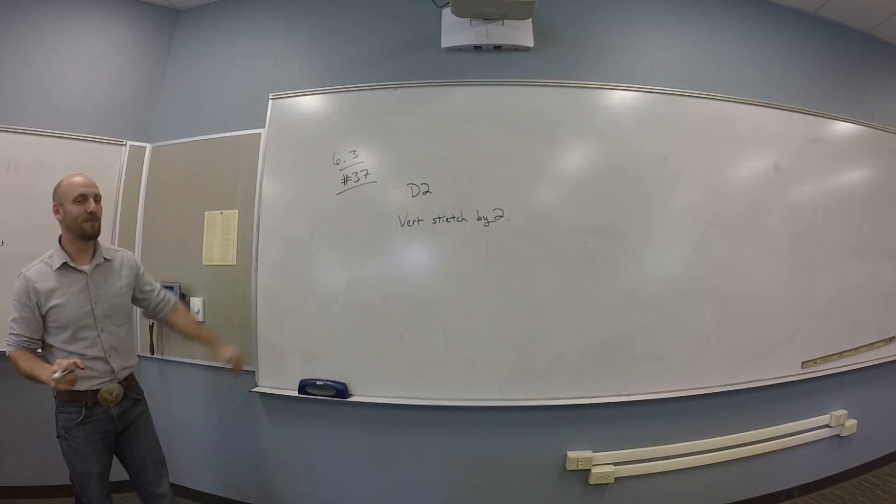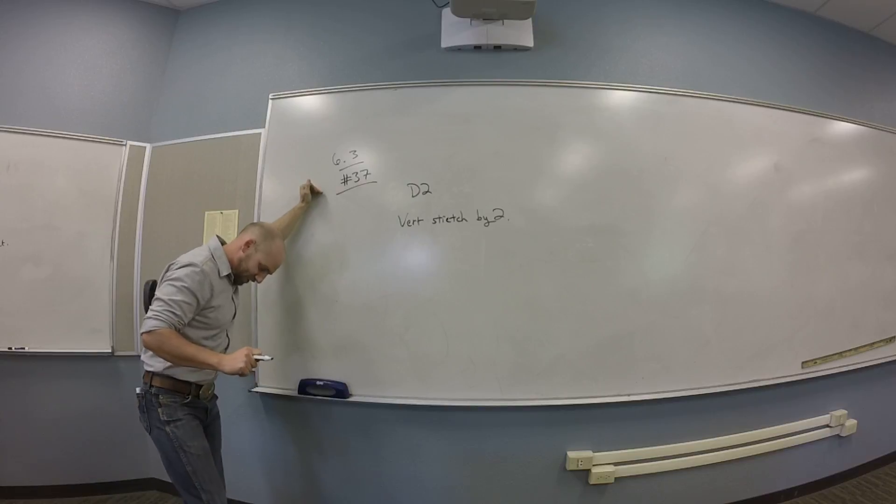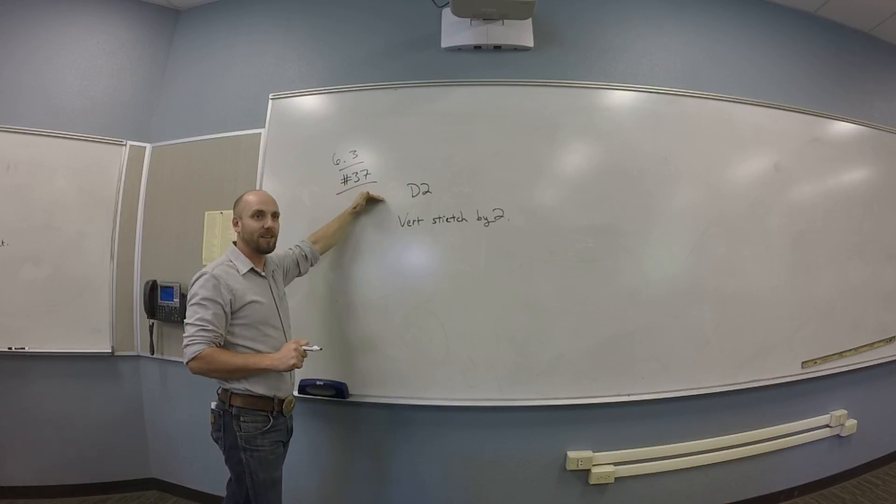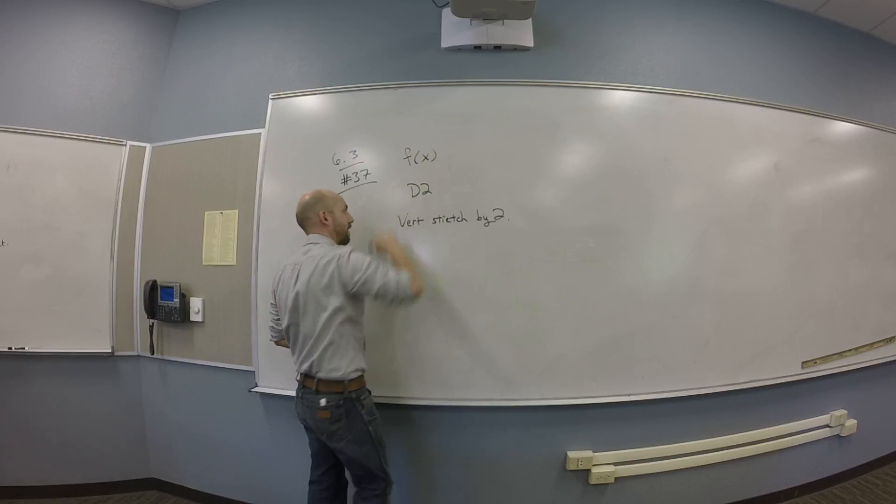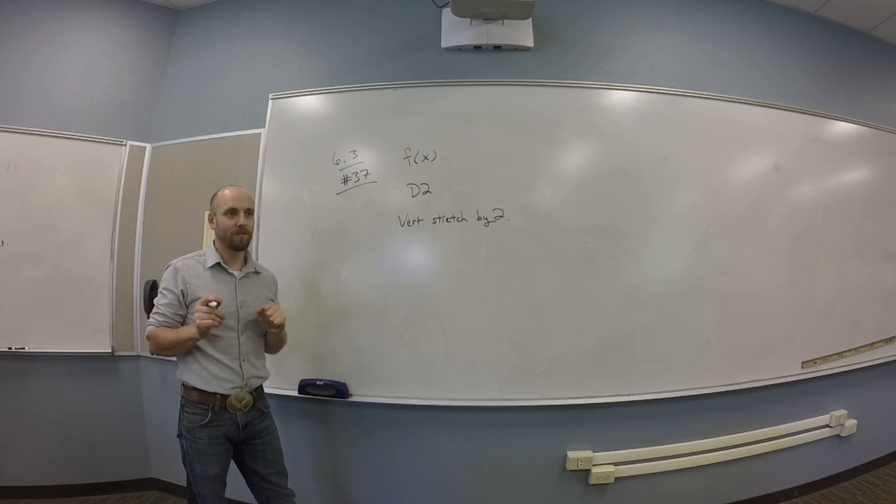All right, so if we could please do number 37, 6.3, which says I would like to calculate the formula for taking a function f, go down 2, and then do a vertical stretch by a factor of 2.